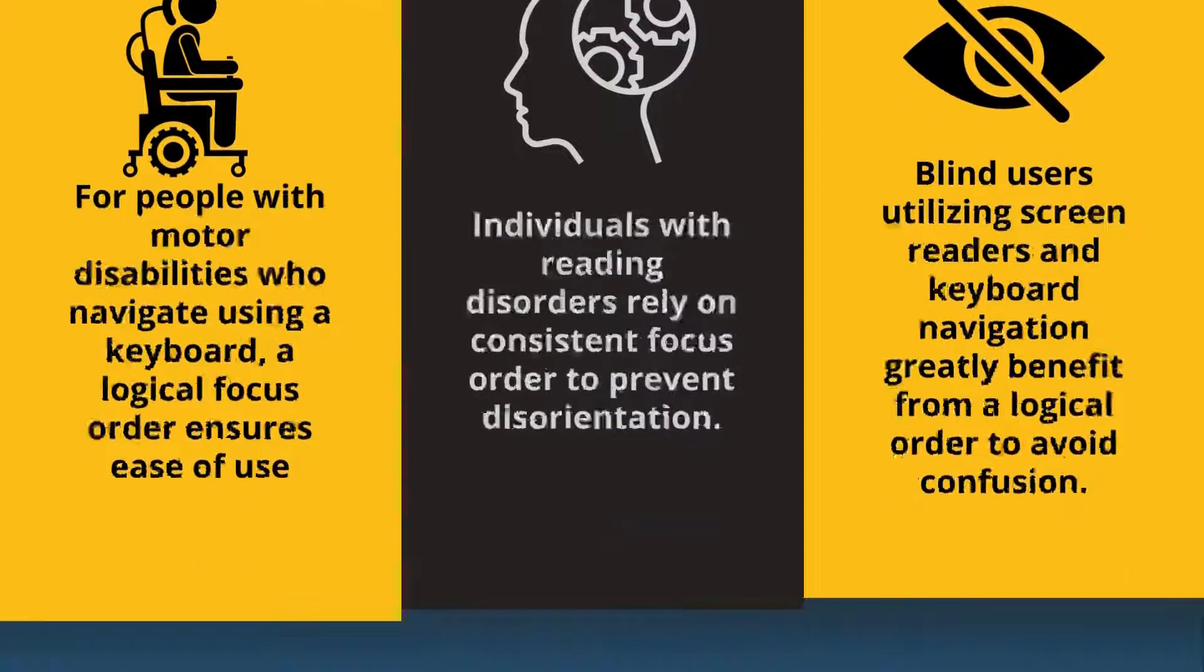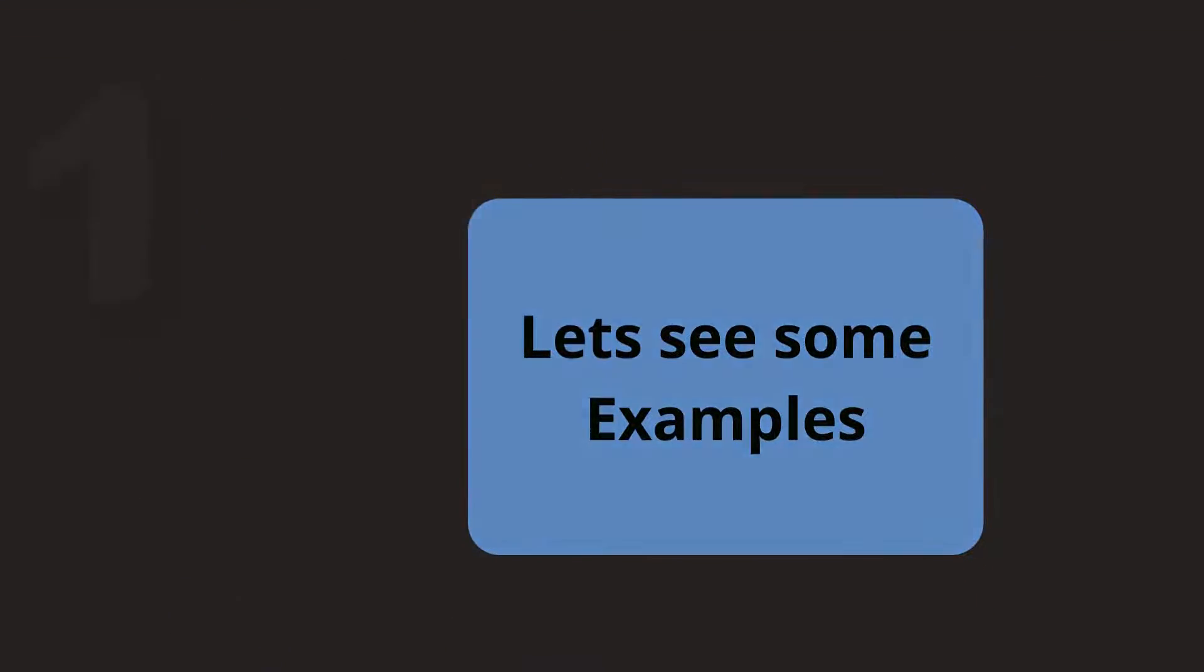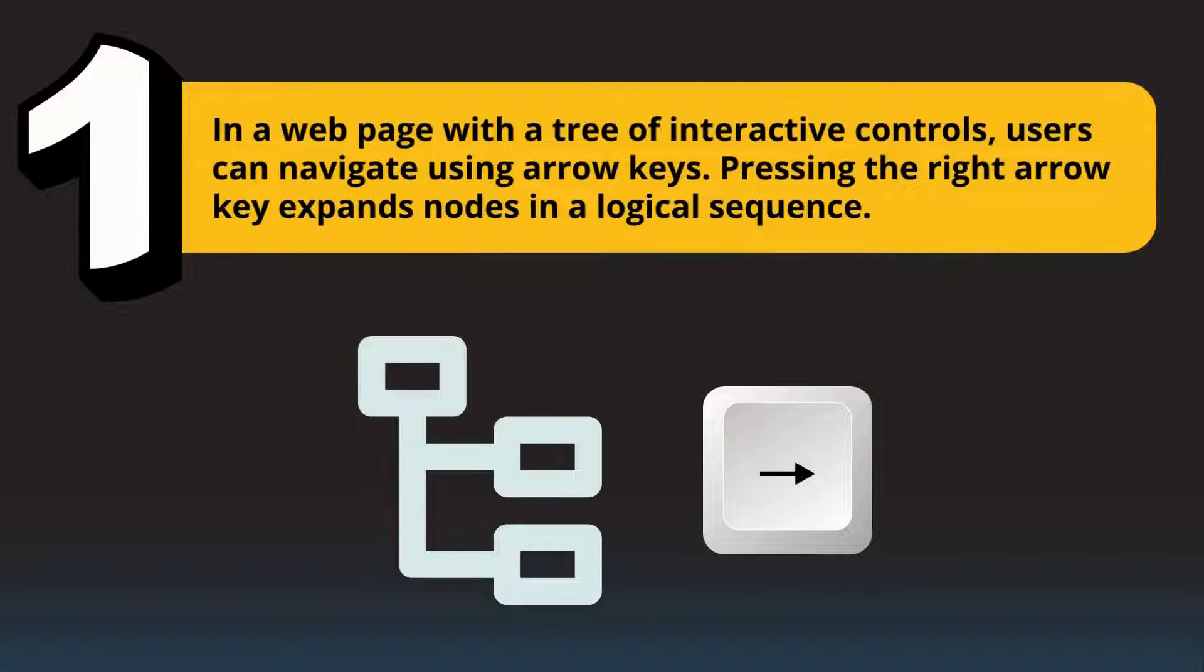Let's see some examples of a good focus order. In a web page with a tree of interactive controls, users can navigate using arrow keys. Pressing the right arrow key expands nodes in logical sequence.